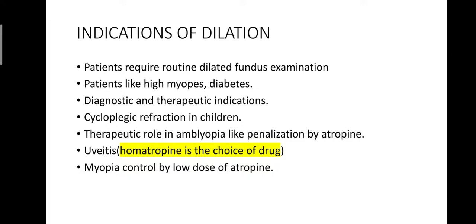Dilation is also used for diagnostic, therapeutic, and cycloplegic refraction purposes. Cycloplegic refraction in children is extremely important, especially in hyperopes. In hyperopia, due to the small eyeball the rays converge behind the retina, but increased accommodation in children increases the converging power of the lens, causing rays to form before the retina and giving different retinoscopy readings. Therefore cycloplegic refraction is highly recommended.